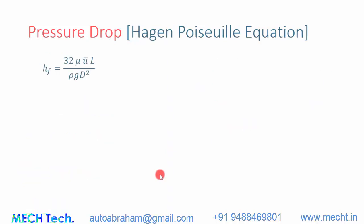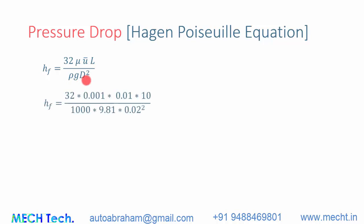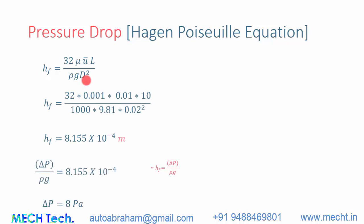Now we do the same calculation using the Hagen-Poiseuille equation: hf = 32μUL/(ρgD²), where μ is the dynamic viscosity, U is the average velocity, L is the length of pipe, ρ is the density, and D is the diameter. Substituting the values gives the same pressure drop of 8 Pascals.